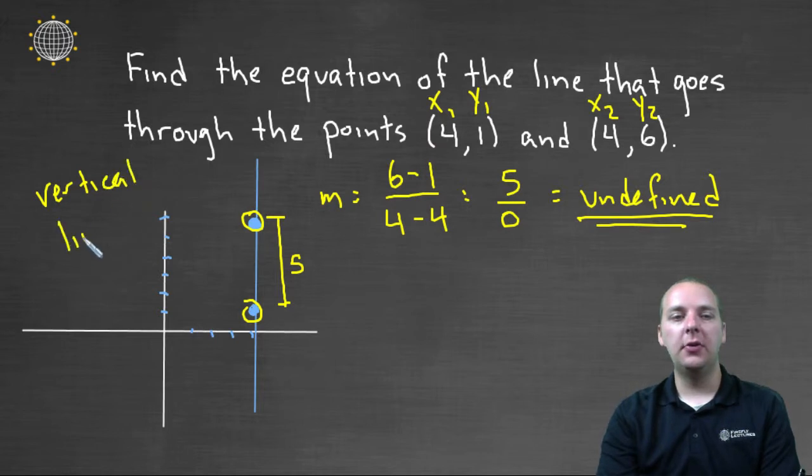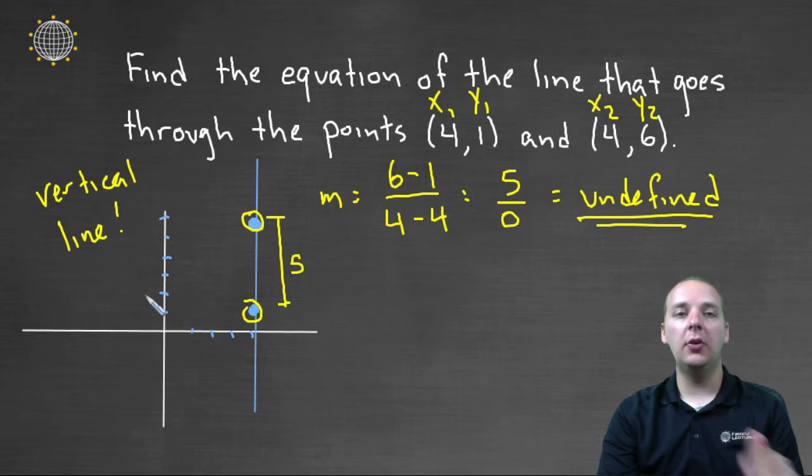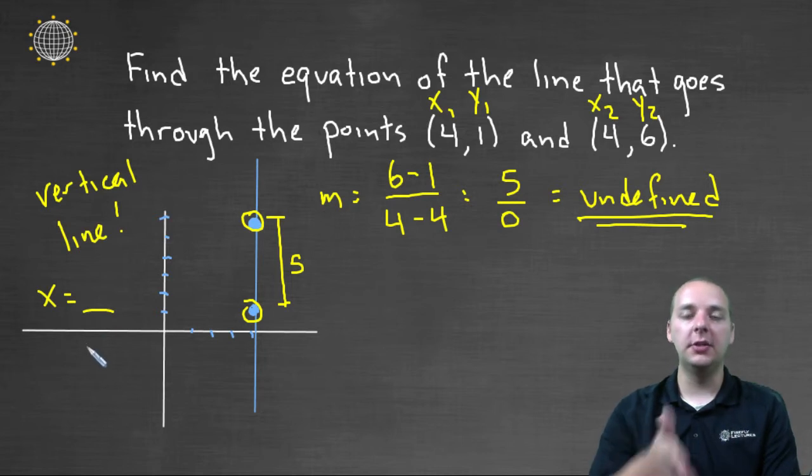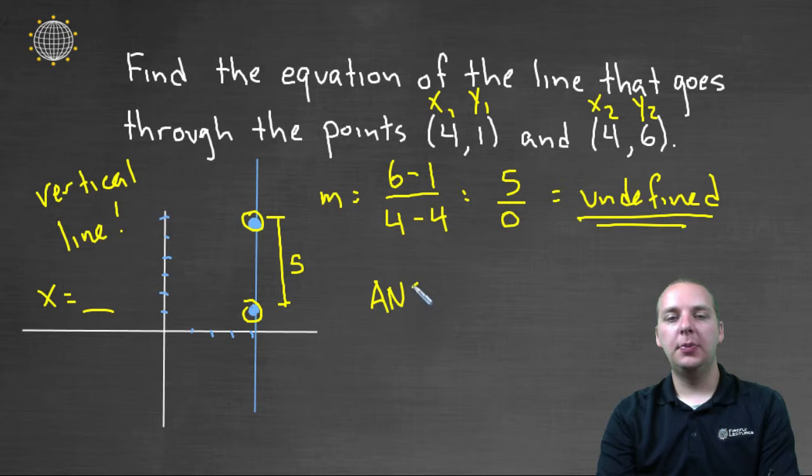So this is a vertical line, and our mind immediately changes gears because we know that vertical lines are not y equals mx plus b at all. In fact, they don't even have a y. In fact, they're written x equals some value. That's the equation of a vertical line. So our answer is pretty immediate.